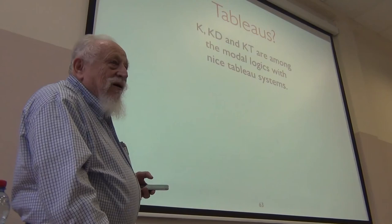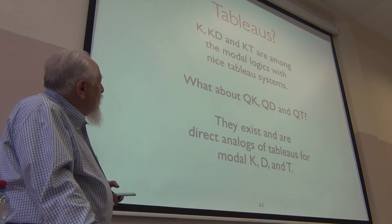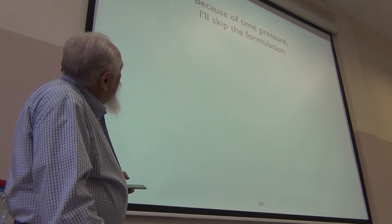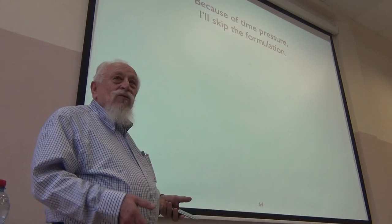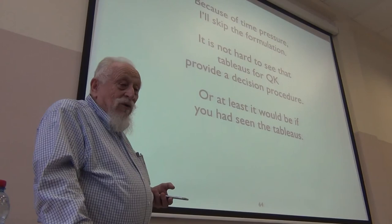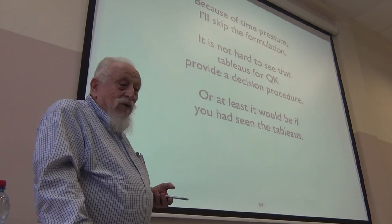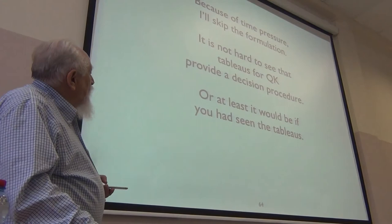Other proof procedures: I showed you axiom systems. If you've seen tableau systems for modal logics, you should be able to invent them for these quantified logics. The paper is on my website if you want to see them. Every place you do something with a box in a modal tableau, do the same thing with the universal quantifier — you'll get tableau systems for these logics. One way of showing modal logic K is decidable is showing any tableau construction must terminate. The same thing works for QK, so that's a decidable logic.